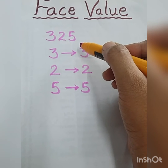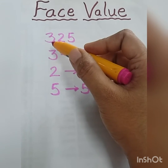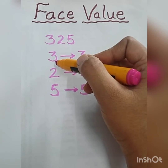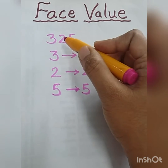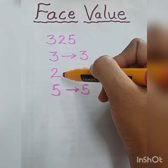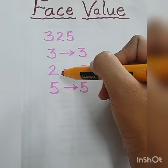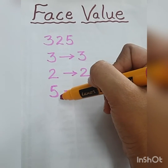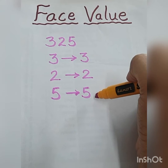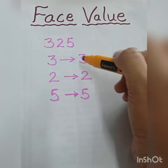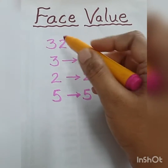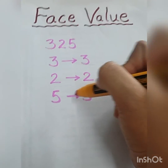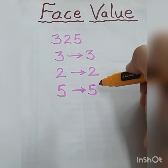Face value never changes according to the position of the number. So here 3 is at hundreds place, but still we write 3 as it is. Face value of 5 is 5 — it does not change according to the position. Face value means the number itself; we write the number as it is.